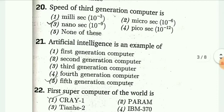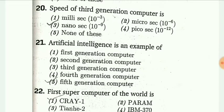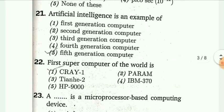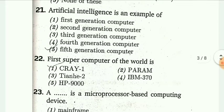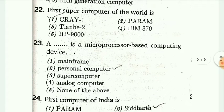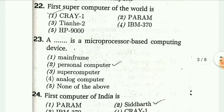The speed of third generation computer is in nanosecond, that is 10 to the power minus 9. Artificial intelligence is an example of fifth generation computer. Next, the first supercomputer of the world is CDC 6600.